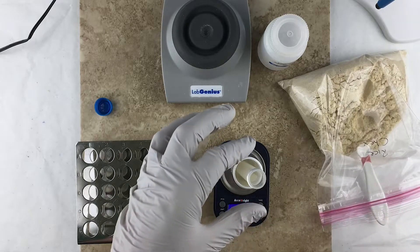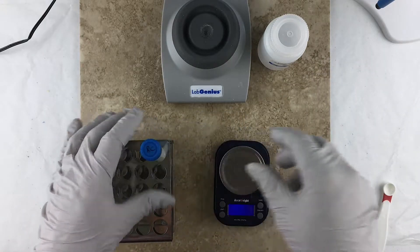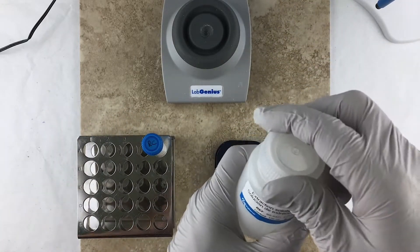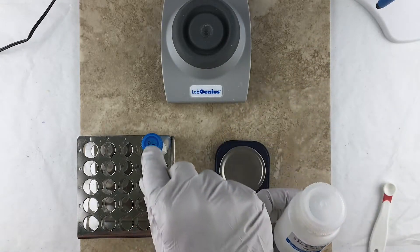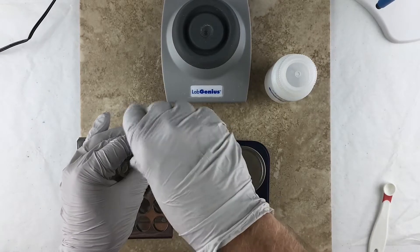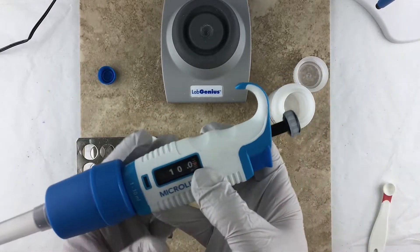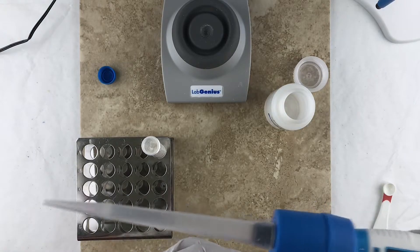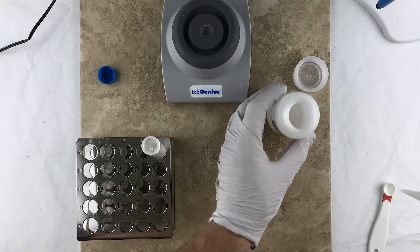Okay, there's one gram. All right, so now what needs to happen is we need to take some extraction solution and put it into the sample vial. So I've got my pipette here set to 10 milliliters, which is the appropriate amount of extraction solution.